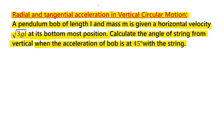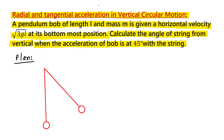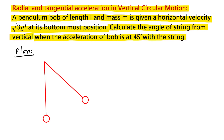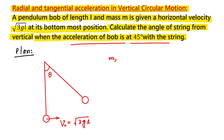Let us plan this problem. You have been given a bob, and if you give a velocity to this bob, it moves in a circle and finally reaches some point. Initially you have given a velocity V₀ = √(3gL), and after some time the ball reaches a new position. Let us call this angle theta. The mass of this bob is M, and it is given that the acceleration of the bob makes 45 degrees with the string.